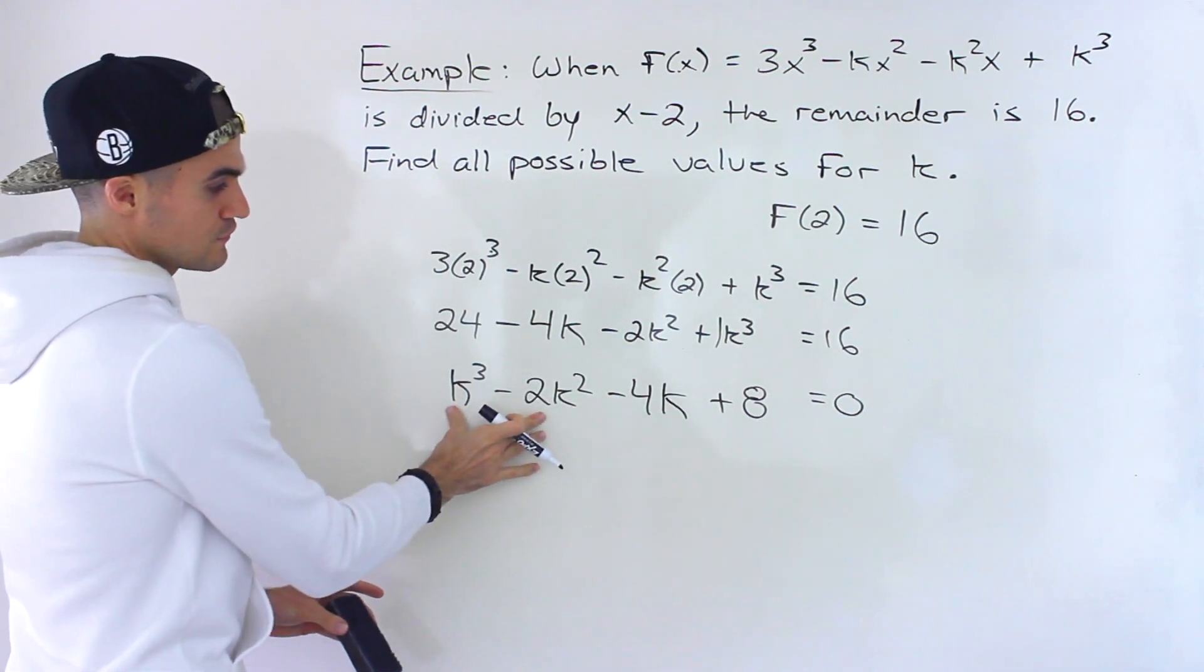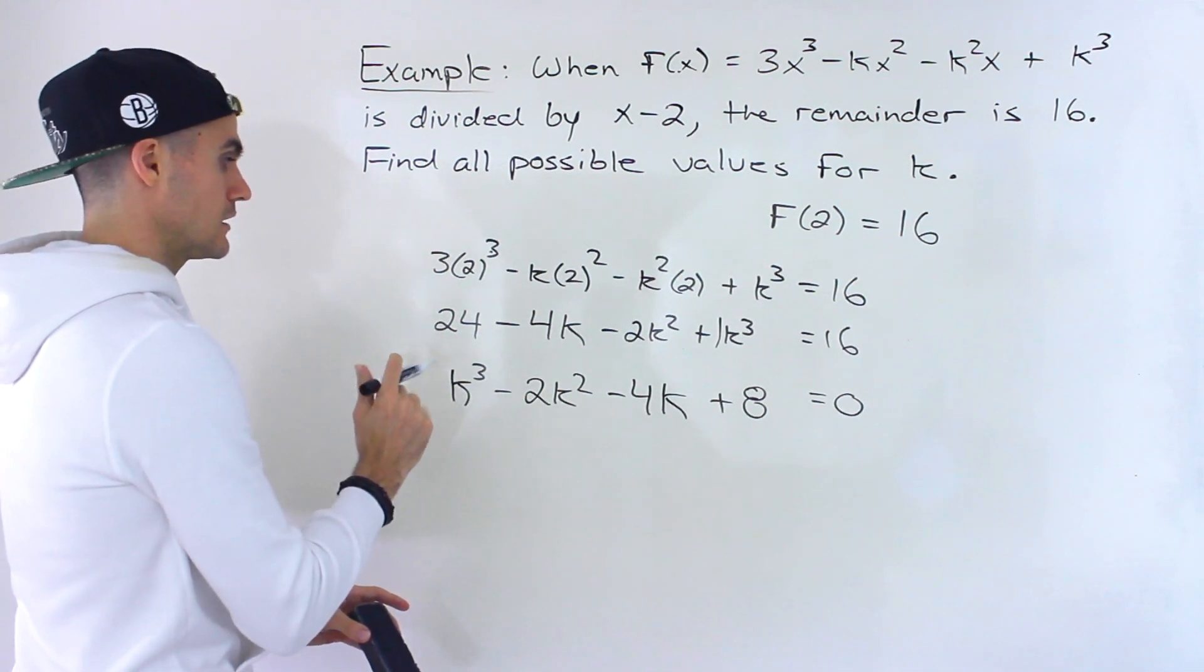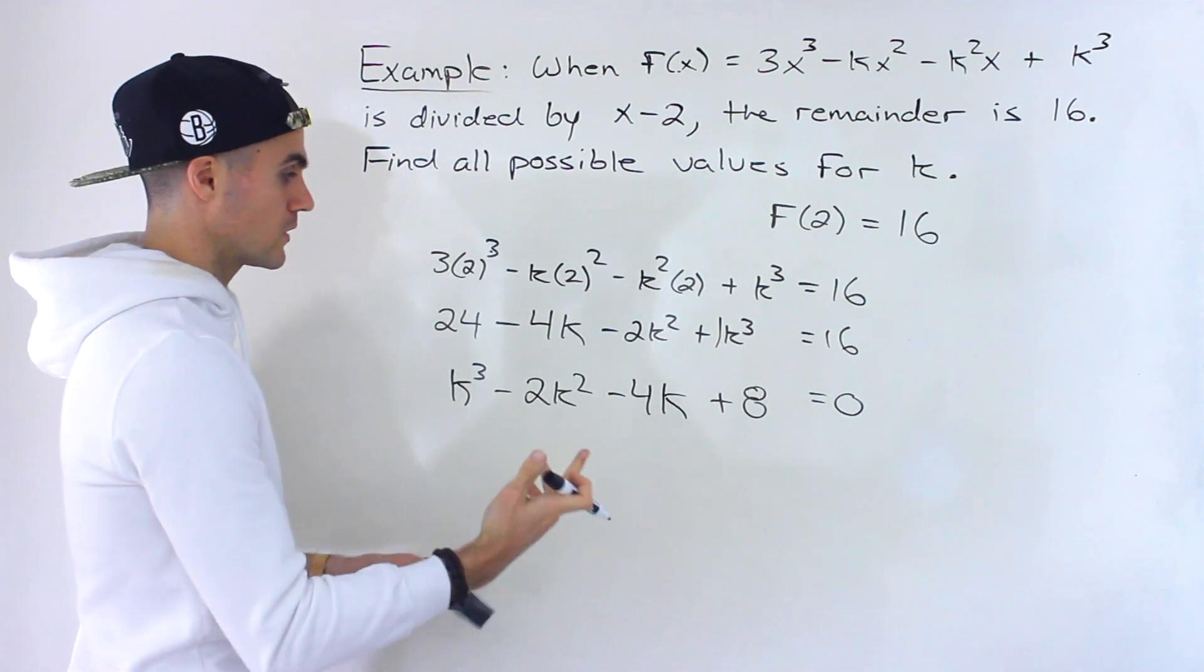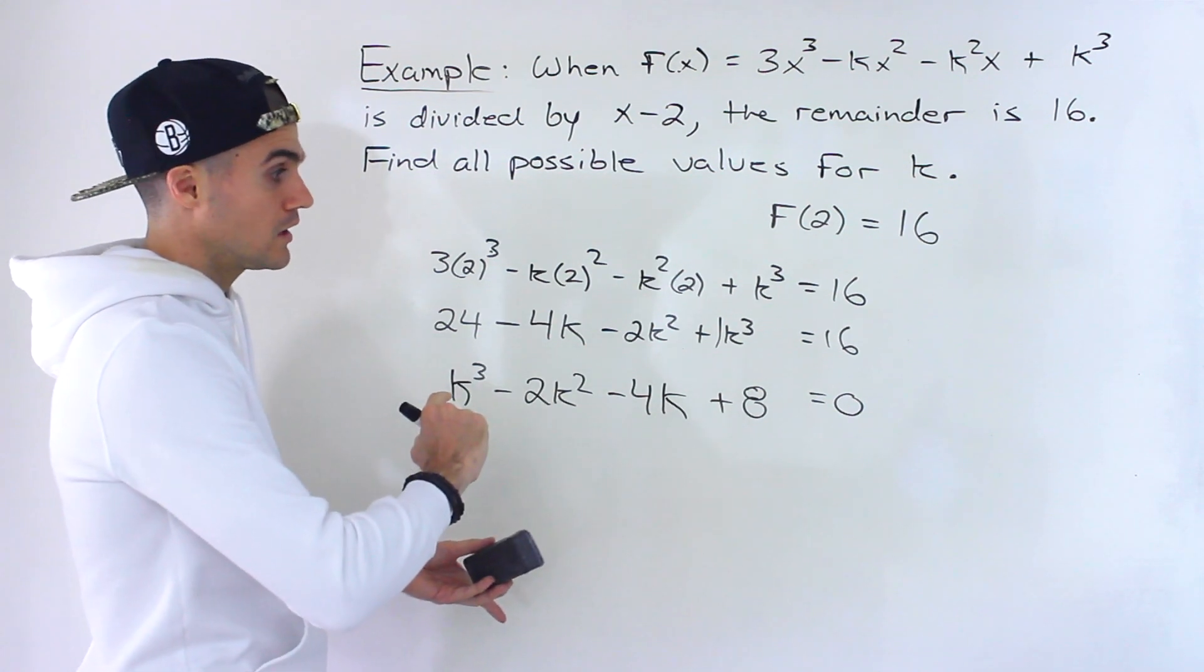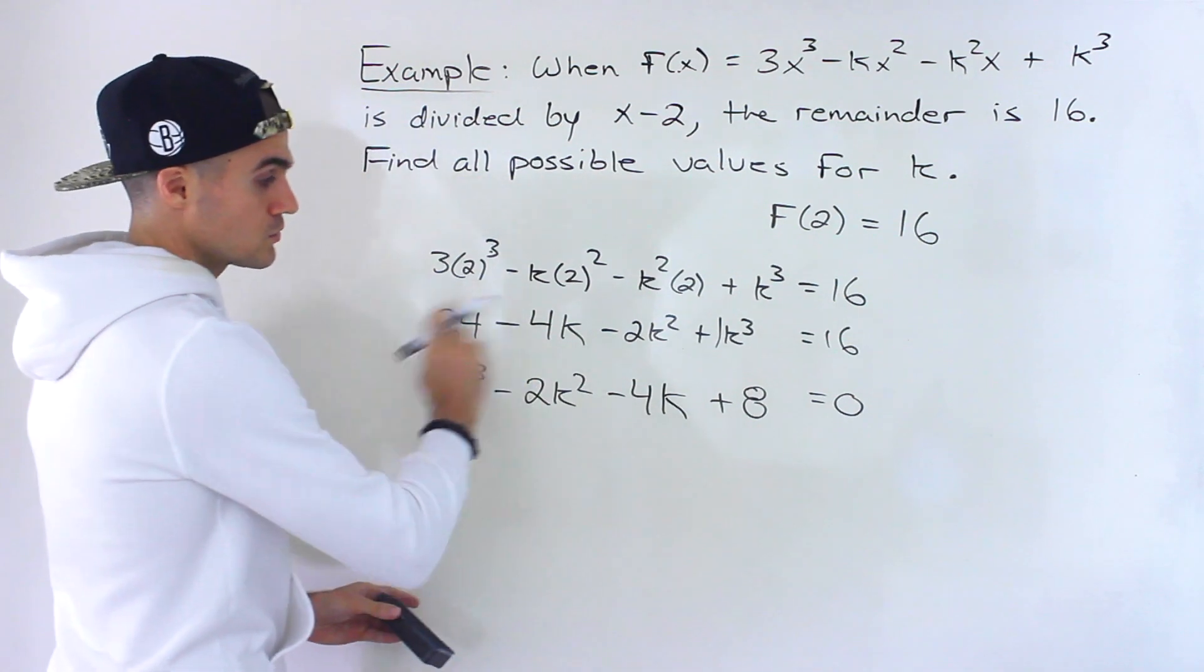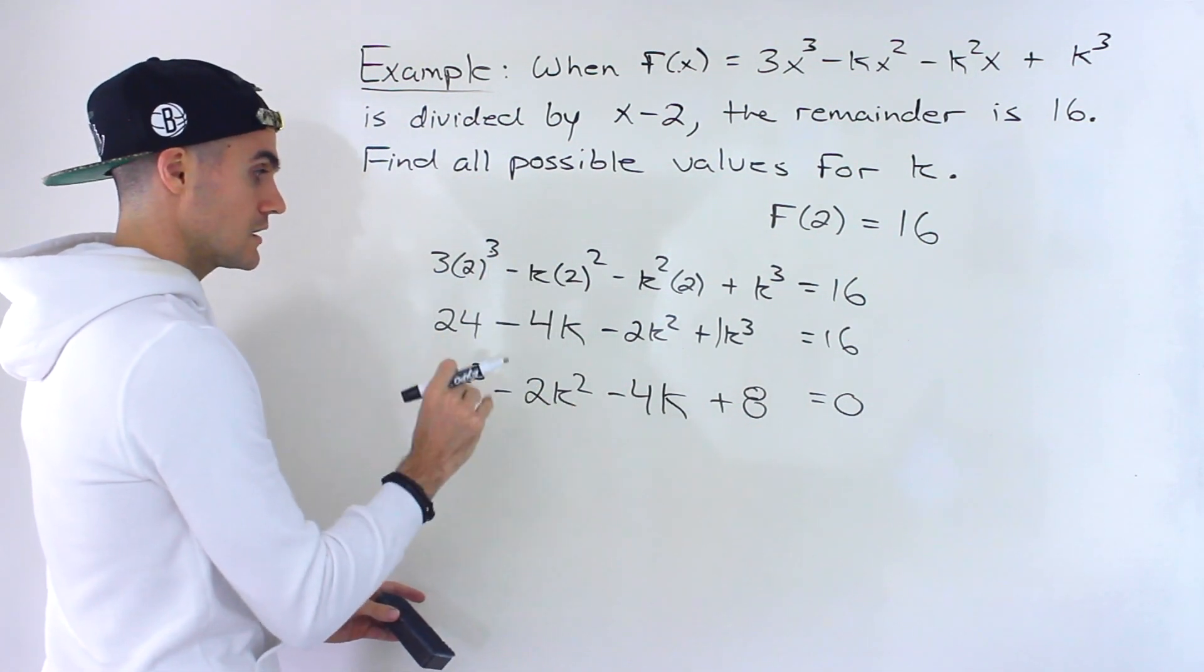Now we solve this. This actually factors smoothly by grouping. If it didn't, you could use the factor theorem—try different values for k: ±1, ±2, ±3, until you make it equal 0, then do long division.